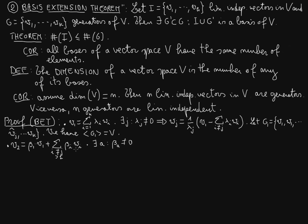How comes? Let's see. Suppose that this is not the case. So all these beta i's are zeros and we have v2 equals beta 1 times v1.